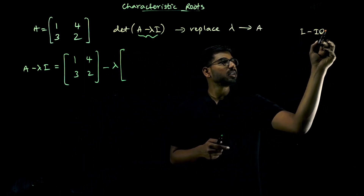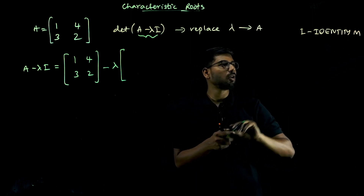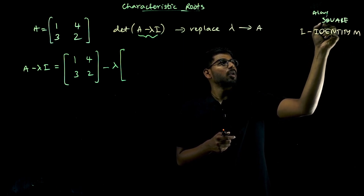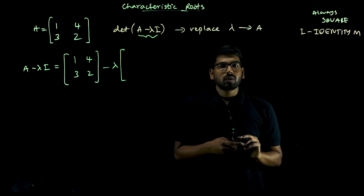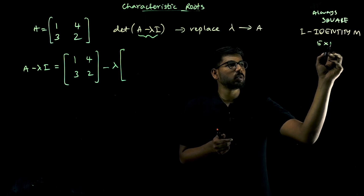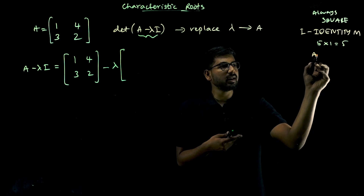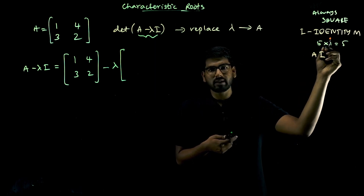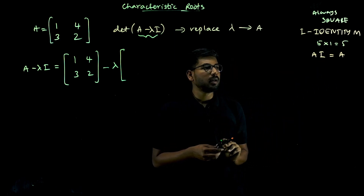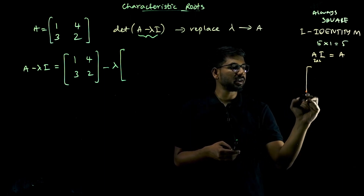I is the identity matrix — a special matrix that is always square. In the case of numbers, if you multiply any number by one you get the same number. Similarly, if you multiply matrix A by the identity matrix I, you get A. So I behaves like 1. If A is a 2×2 matrix, then I is also a 2×2 identity matrix with principal diagonal elements equal to 1 and all other elements zero.